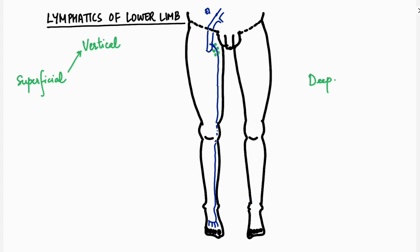Another group, the horizontal group, is placed along the tributaries of the great saphenous vein — that is, along the superficial external iliac and the superficial external pudendal veins. These two groups together form a T-shaped orientation of these nodes.